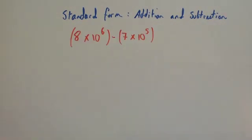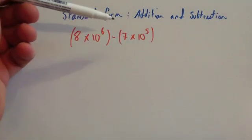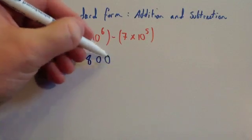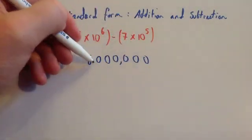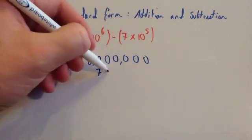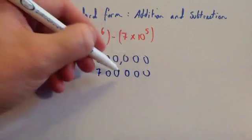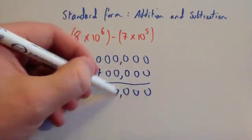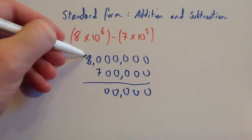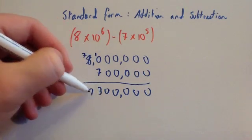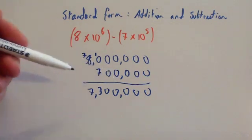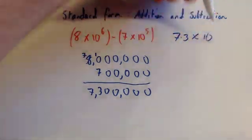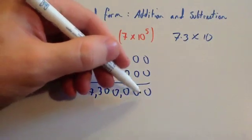Let's have a look at another example. This time we've got 8 times 10 to the power of 6 subtract 7 times 10 to the power of 5. So we've got an 8 followed by 6 zeros — that's 8 million — and a 7 followed by 5 zeros. We're going to subtract them, which gives 7,300,000. We'd write it in standard form as 7.3 times 10 to the power of 6.